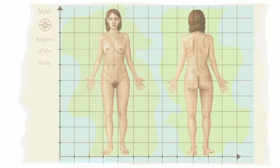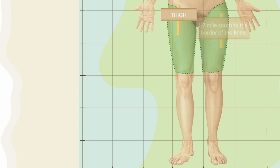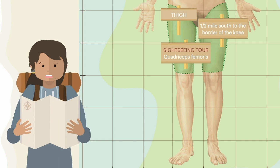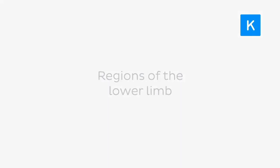The body can be mapped out into many different regions. Today we're only going to focus on the regions of the lower limb. Dividing the lower limb into specific regions gives us a better idea of where each region lies, what's situated around it, and what is found within it. No more wondering what a gluteal fold or an interdigital sulcus is — it's all explained in this tutorial on the regions of the lower limb.